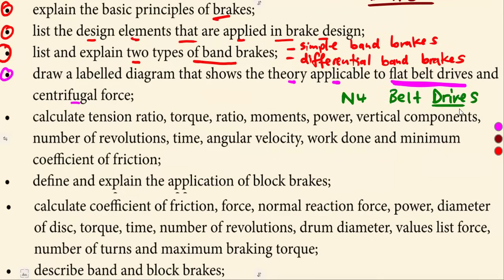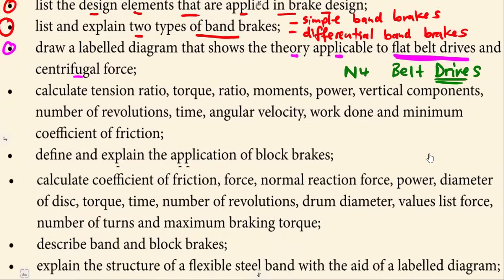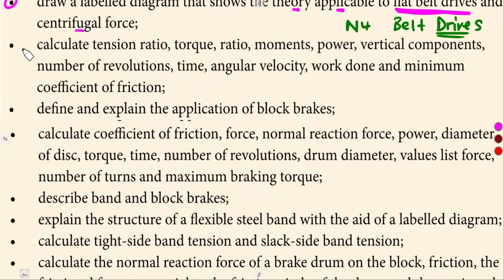Make sure you understand all the formulas listed there: the relationship between tension, effective force, calculation of power, those calculations for torque — make sure that you know all those. It's going to help you understand this topic. On those calculations, make sure you go through how to calculate tension ratio, torque ratio, moments, power, vertical components, number of revolutions, time, angular velocity, work done, and minimum coefficient of friction. These are part of the calculations we're going to need.